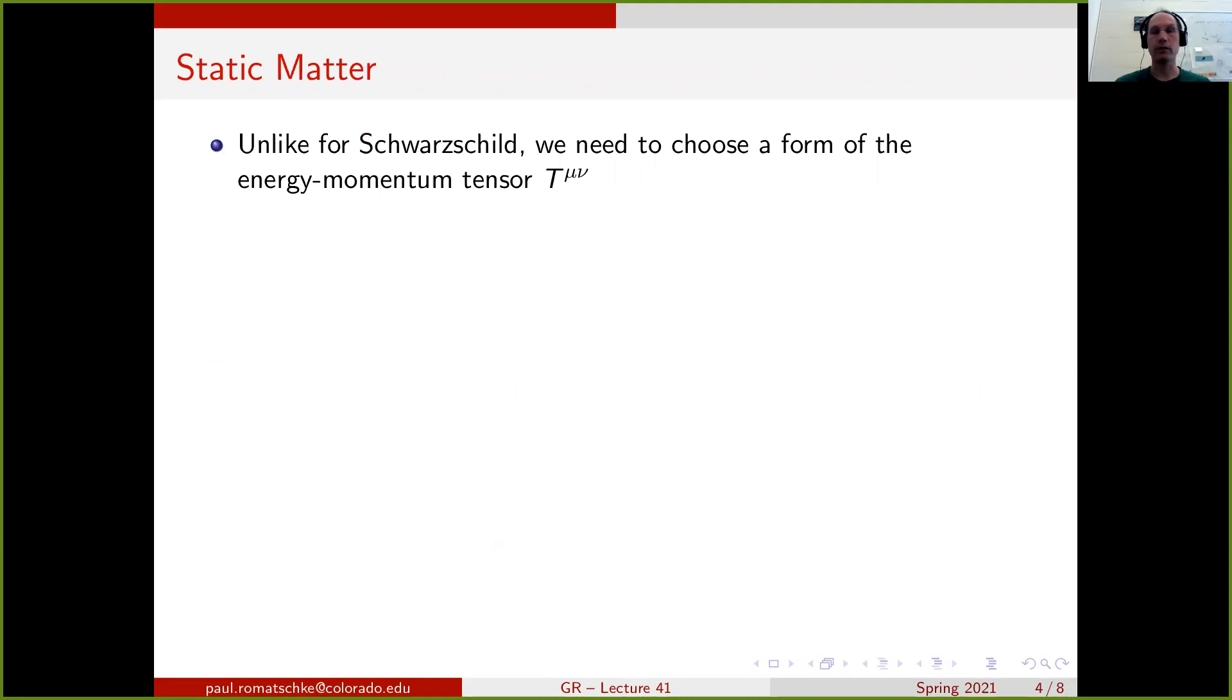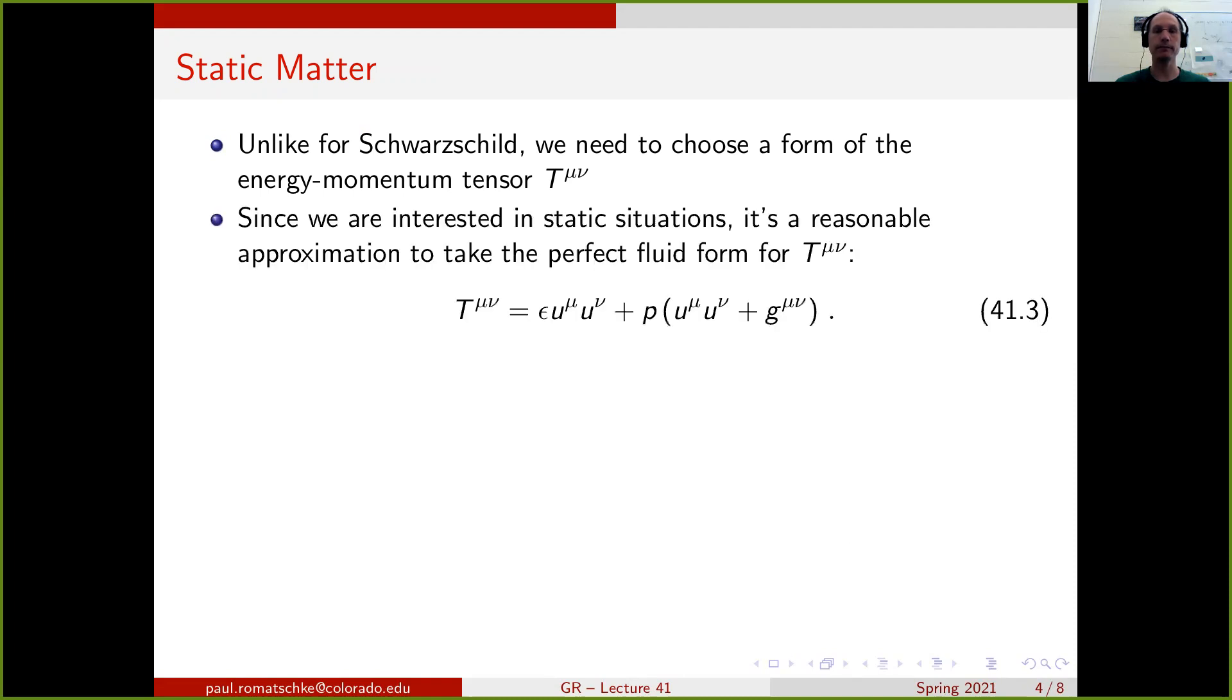Unlike for the Schwarzschild solution, we also need to choose a form of the energy-momentum tensor. Since we are interested in static situations, it is reasonable to approximate T mu nu by the perfect fluid form, which is equation 41.3. Note that this is a reasonable approximation but not an exact statement because there can be additional contributions to the energy-momentum tensor that are static but higher-order derivatives. But we will ignore those since, for most practical purposes, they will only offer small deviations.